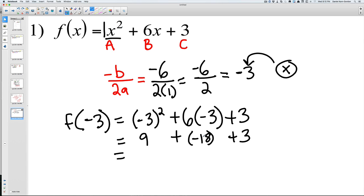And 6 times negative 3 is negative 18, and then we have 3. We know that 9 plus negative 18, it's basically 18 minus 9, is going to give us negative 9 plus 3, and then negative 9 plus 3 is going to equal negative 6.